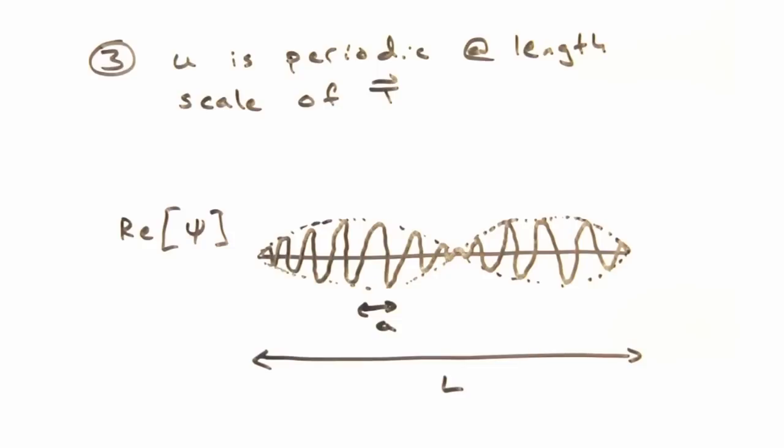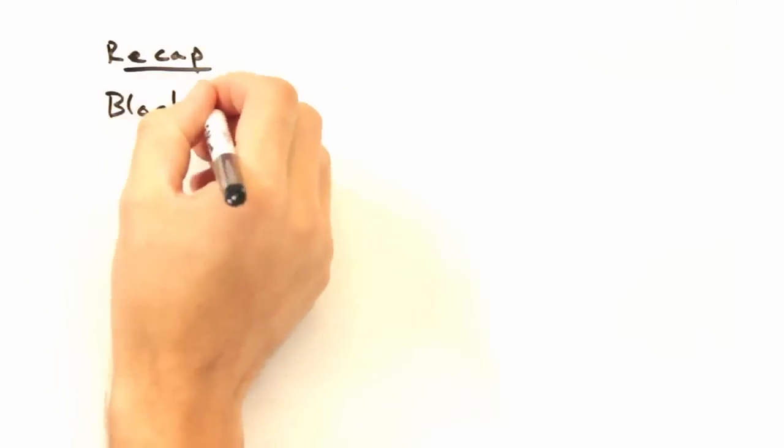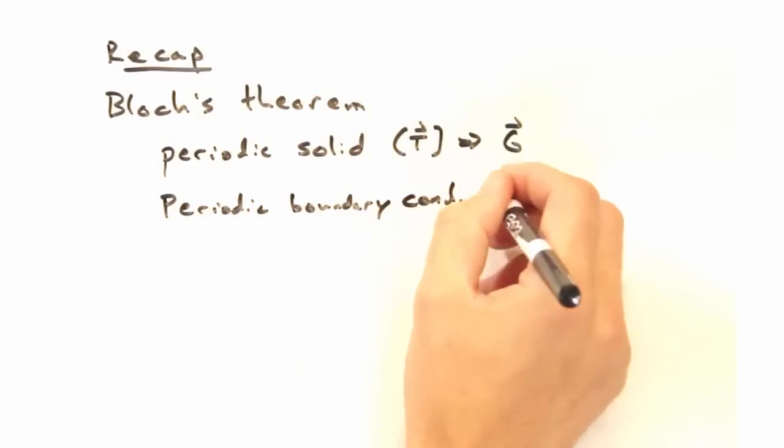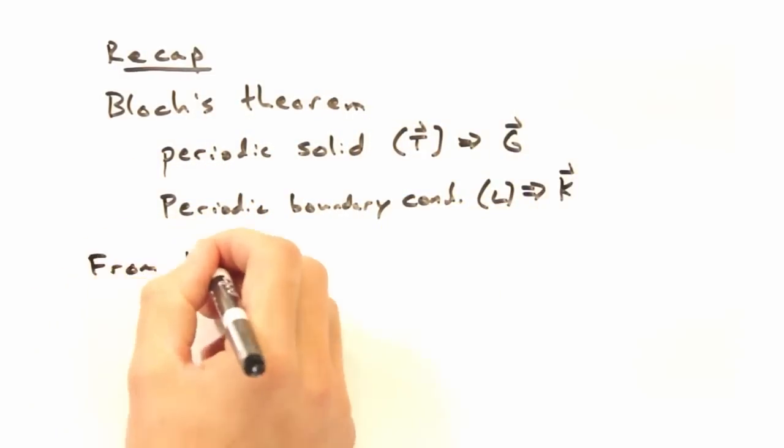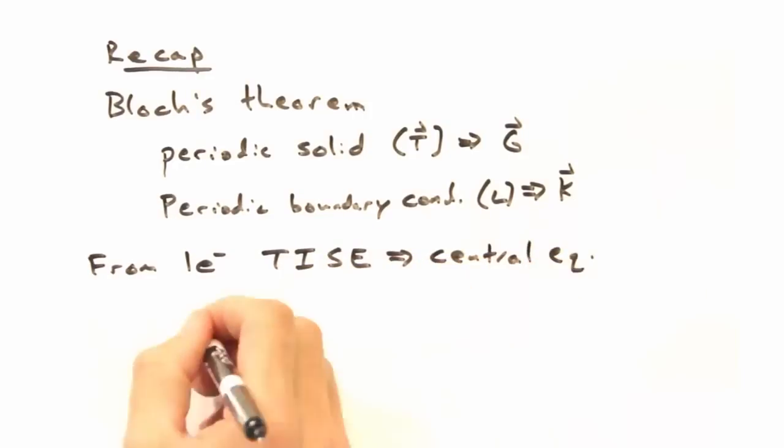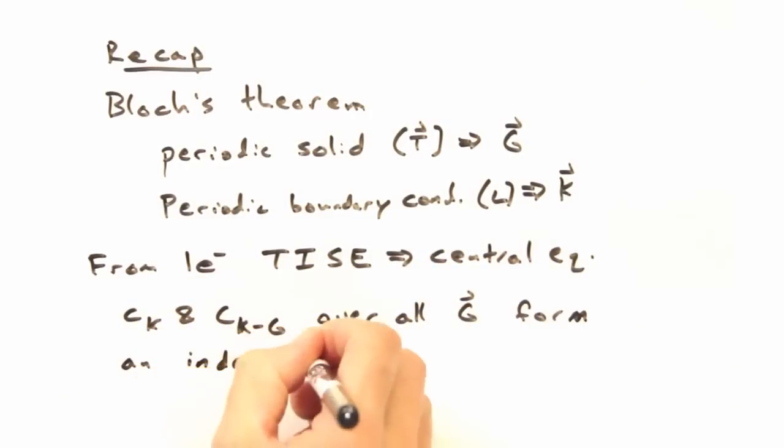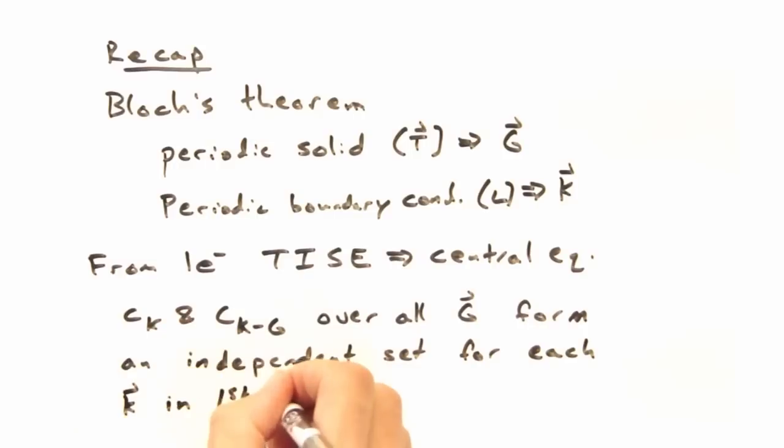Okay, well we've done quite a bit today. It looks like it's time for a recap. We started by introducing Bloch's theorem as a way to describe the wave function of a periodic solid with periodic boundary conditions. And based on the time independent Schrodinger equation, we developed the central equation and found a relation between the Fourier coefficients associated with wave vector k and the coefficients associated with wave vectors k minus g overall g space.